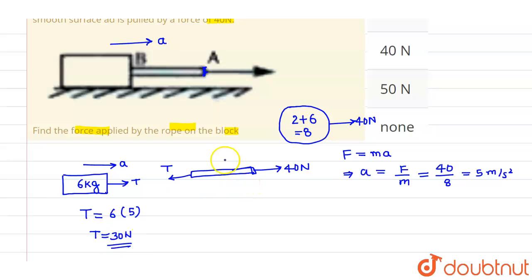The acceleration of the rope is a, which equals 5 meters per second squared. So the equation is 40 minus T equals mass of the rope, which is 2 kg, times acceleration, which is 5.